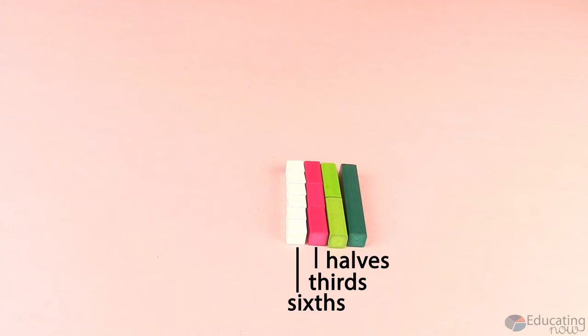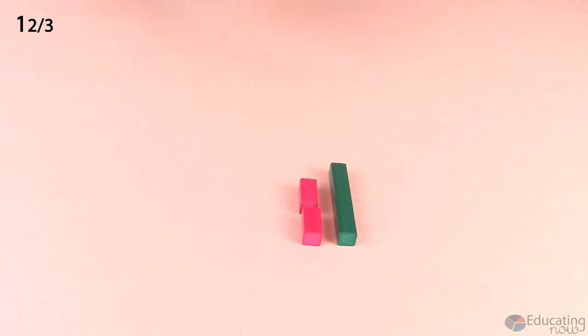Let's start by looking at mixed numbers and turning them into improper fractions. So here we have one whole and two thirds.